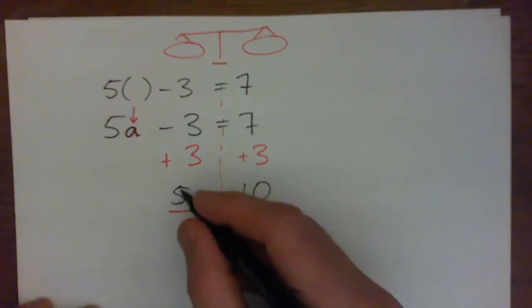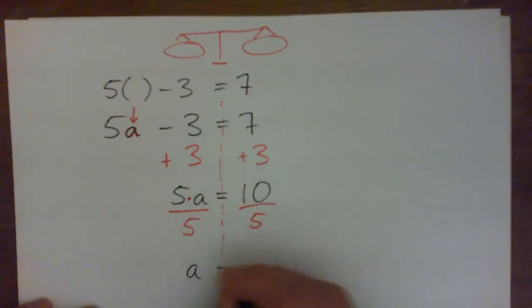So 5 apples divided by 5, 1 apple, or just a, equals, and 10 over 5, 2.